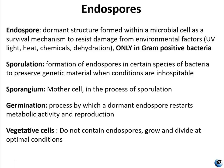An endospore is a dormant form of a bacteria that allows it to survive poor environmental conditions. Endospores are resistant to heat and chemicals because of a tough cortex layer with an outer covering made of a protein keratin. Bacteria that are capable of producing endospores don't do so uniformly during their growth, so it is a cycle of sporulation and germination.